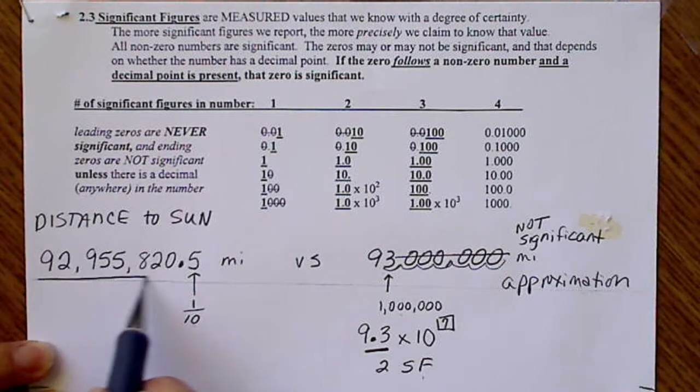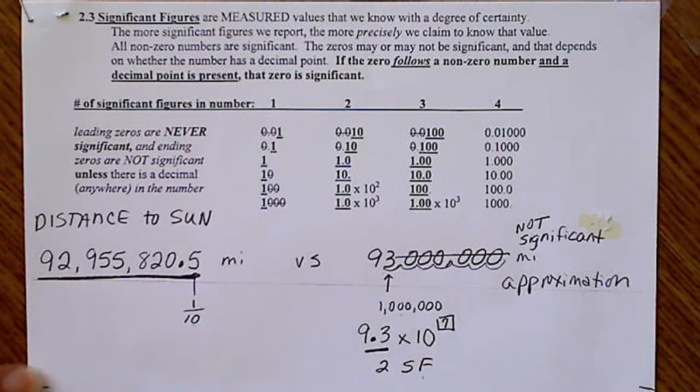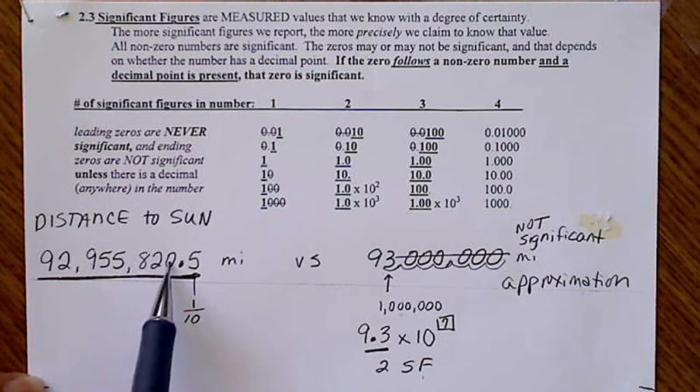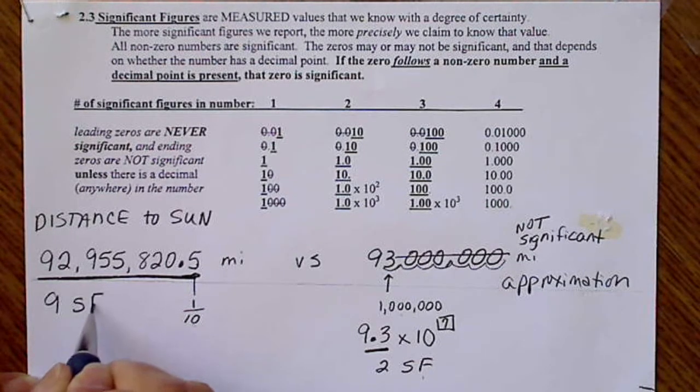This number, all of these values, we know with certainty. So this number has 1, 2, 3, 4, 5, 6, 7, 8, 9. This value has 9 significant figures.